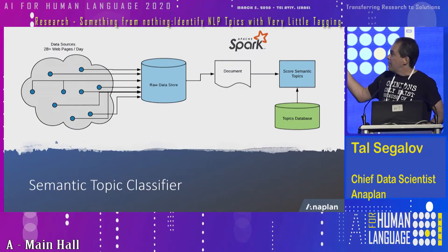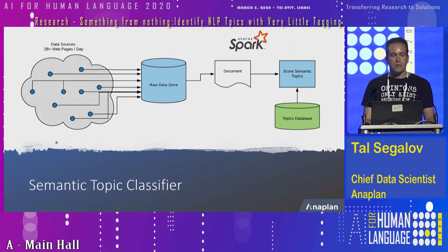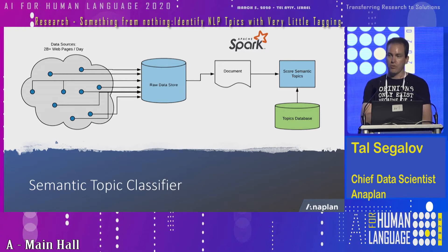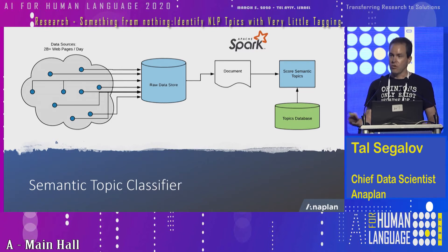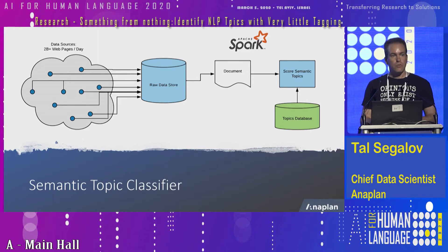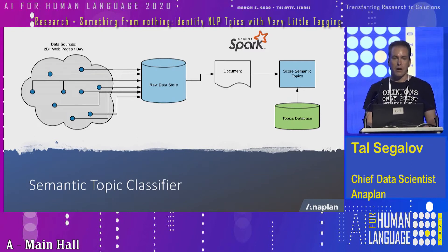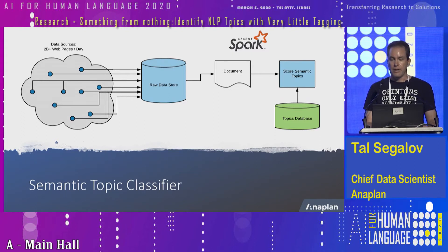Basically, what we have at the input is a lot of events coming from all kinds of web sensors that we have as data collections. We process more than 2 billion daily events of content consumption. That goes into a raw data store, and from there we look at the documents and try to figure out what each one of those documents is actually talking about. For that we have a topics database that contains thousands and thousands of different semantic topics, and those topics get scored against each document.